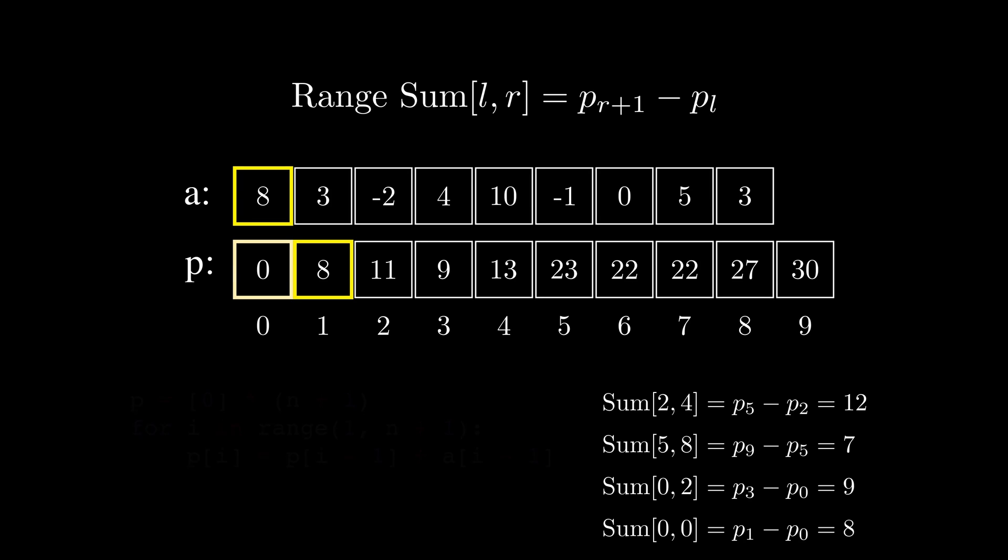In total, if we have n items in our array and q queries, we would perform n operations to get the array, pre-compute the prefix sum array, and q operations to answer all the queries. So in total the time complexity of the algorithm would be O of n plus q, while the memory complexity would be O of n, as we hold the initial array and also create a new one that has a length of n plus 1.